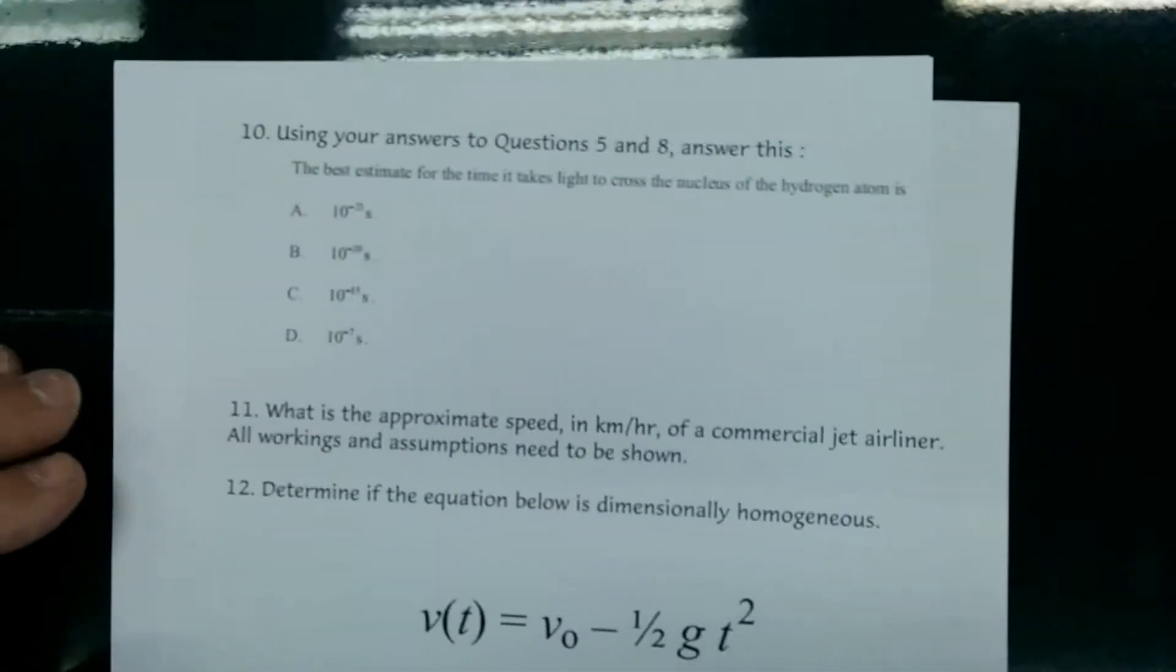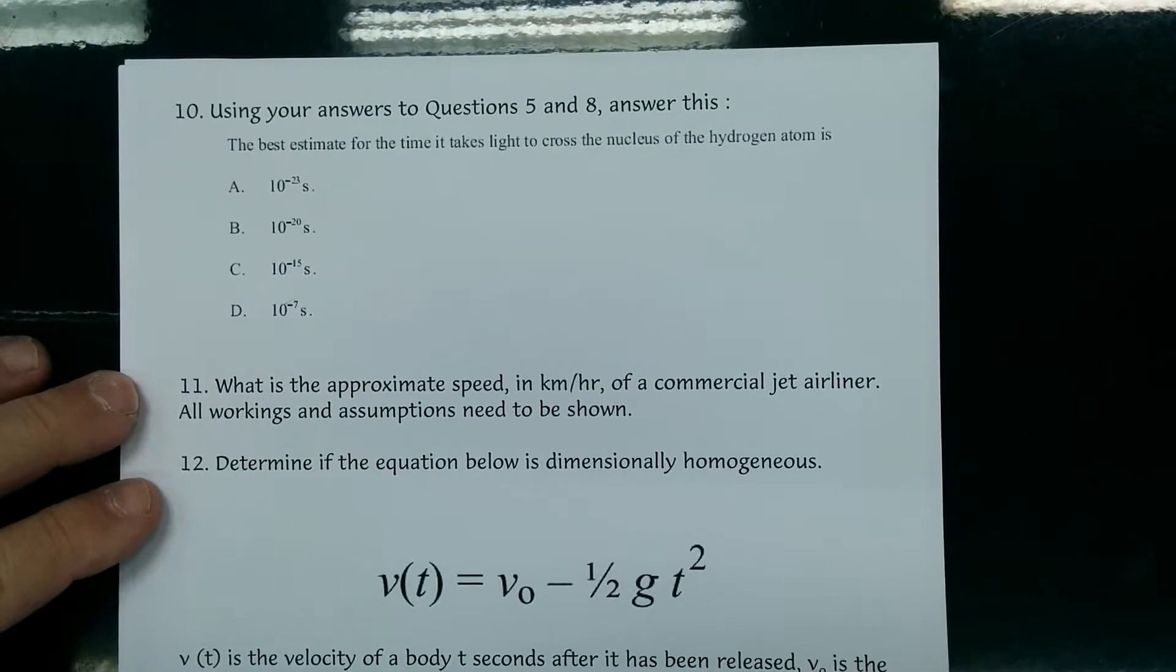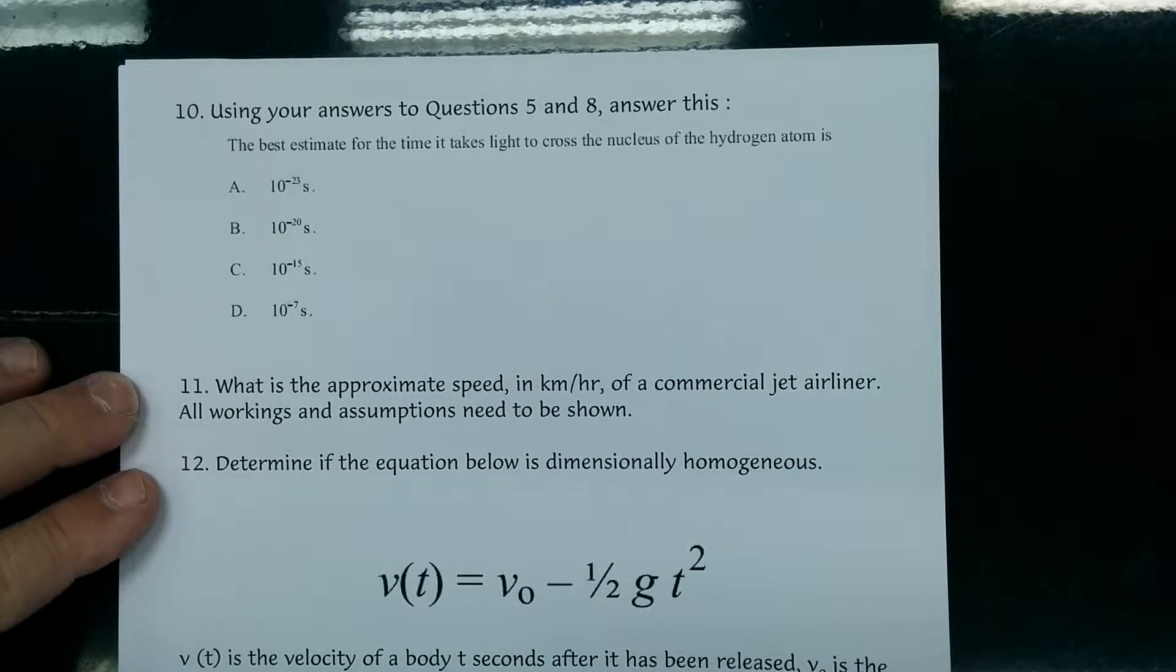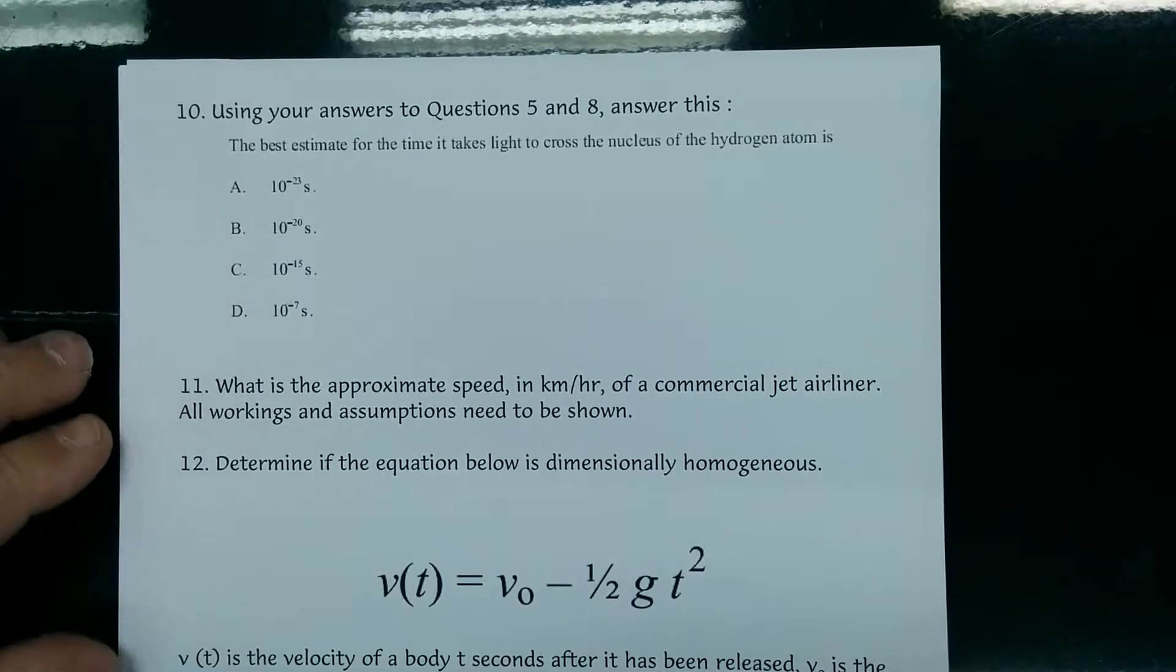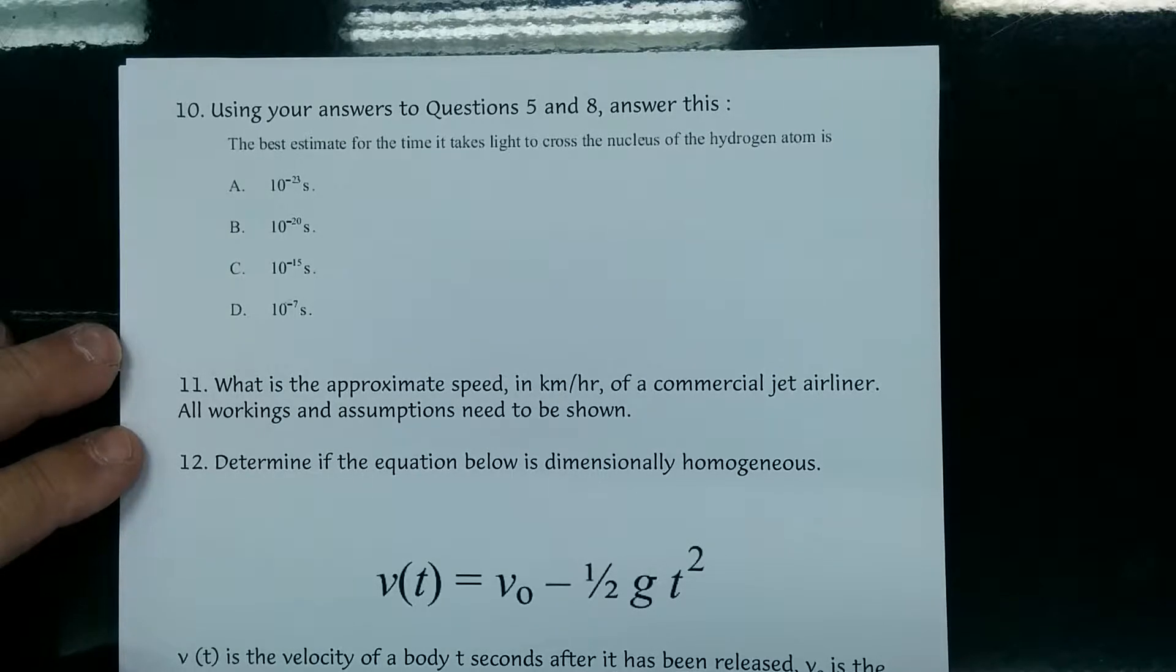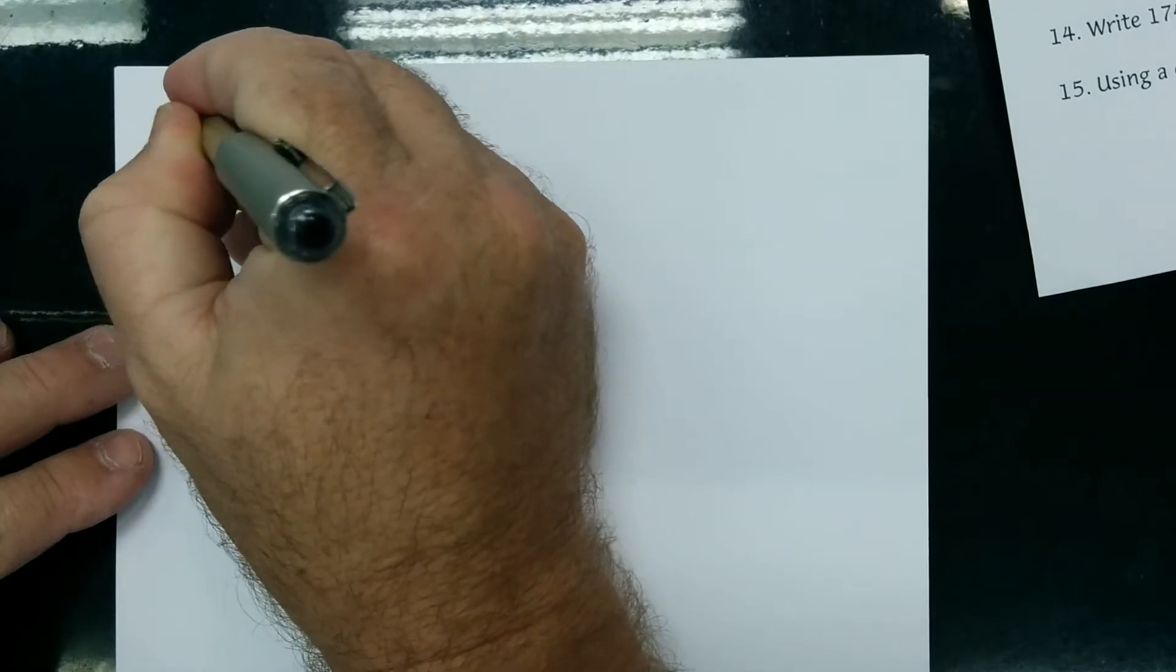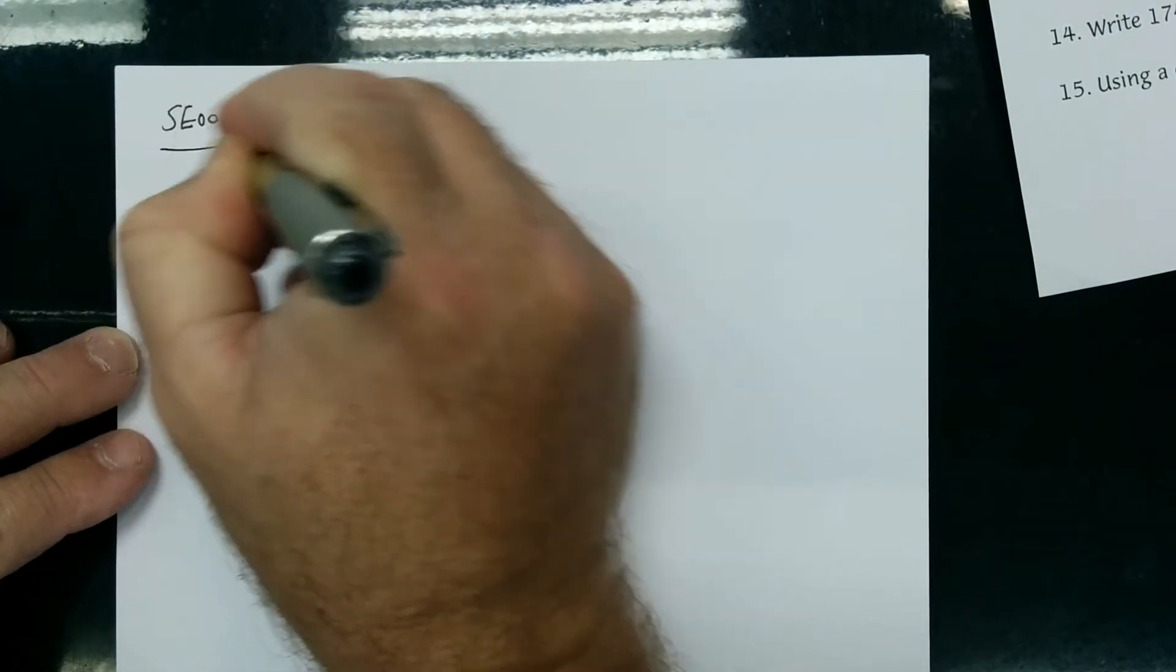So in this question we're answering the best estimate for the time it takes light to cross the nucleus of the hydrogen atom. It's one of these four answers. Let's calculate the time and see which one is the best one. Stage exam zero zero question 10.